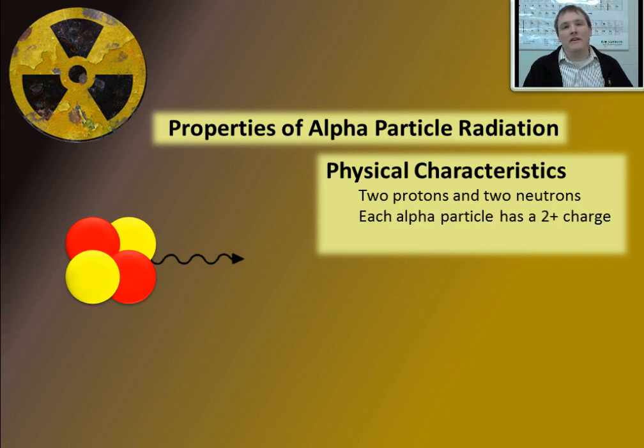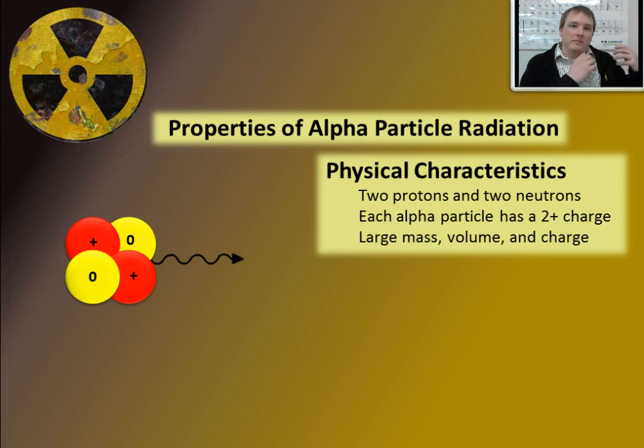Also, each alpha particle, because it contains two protons and two neutrons, has a two-plus charge. As you look on the charges of each of the particles, you'll notice that there are two positive protons and two neutral neutrons that don't affect the charge at all. So each alpha particle has a pretty big charge, which gives it the ability to take electrons away from other matter. Finally, just to summarize, alpha particles have a large mass because they're made of two protons and two neutrons, which are the things in an atom that have mass. It has a pretty big volume as far as radiation is concerned, and it has the biggest charge of any type of radiation.